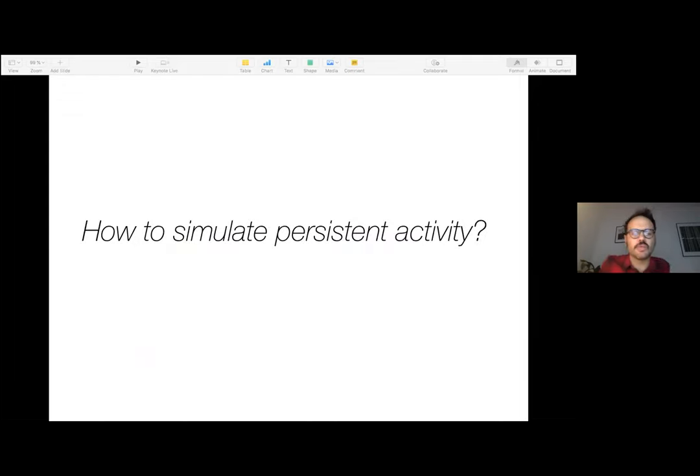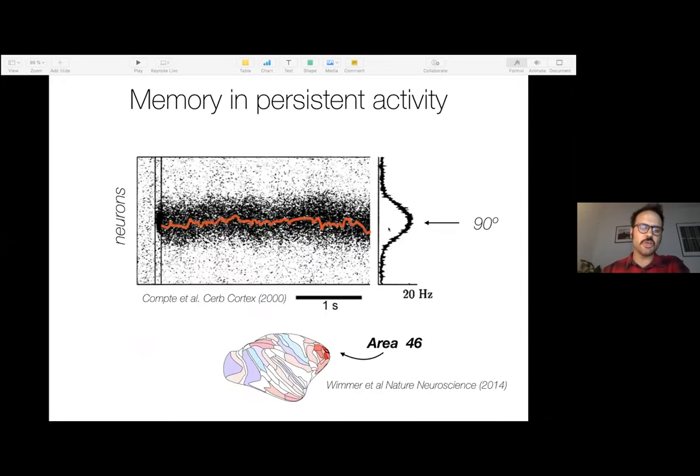So the question we have now is how do you simulate this persistent activity? I'm going to very superficially introduce you to a model, a bump attractor model. And so here is one simulation of such model. Here you have all the neurons in that network and here is time during one simulation. And in this simulation, I'm simulating that the monkey is memorizing 90 degrees. So I stimulate these neurons that code for 90 degrees. And because these neurons have a lot of recurrent connection, the recurrent connection is strong, they are able to sustain during the whole delay period this bump of activity. So this network, in a way, has memory in this activity. So this neuron, for example, in the middle will have persistent activity as in the prefrontal cortex.